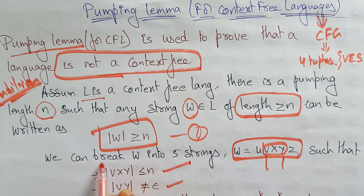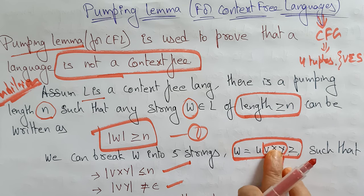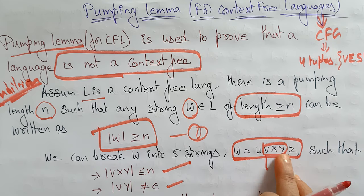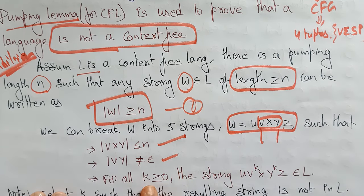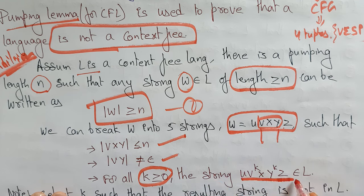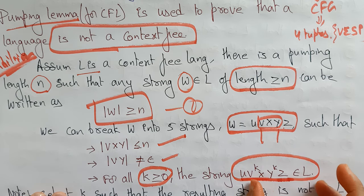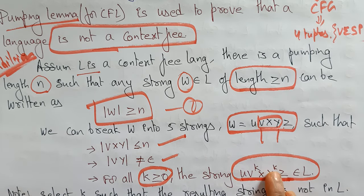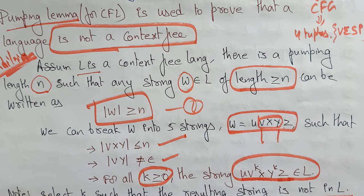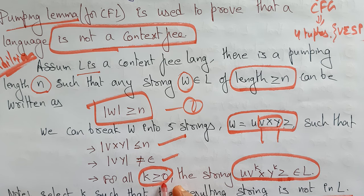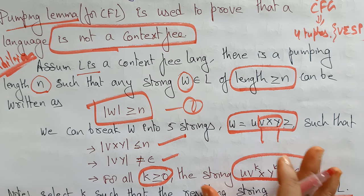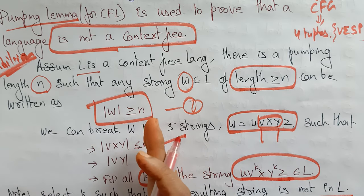We break the string into five parts u v x y z where |vxy| ≤ n and |vy| ≠ 0. For all k ≥ 0, the string u vᵏ x yᵏ z must belong to the language. This is the condition we are working with. To get a contradiction, we must select a value of k such that the resulting string does not belong to the language.